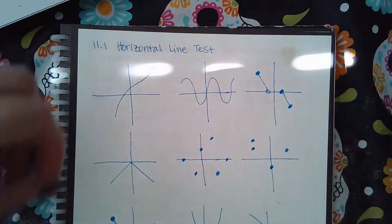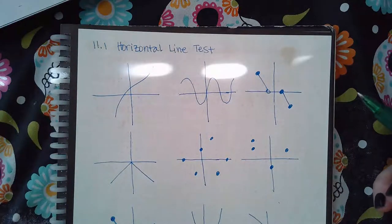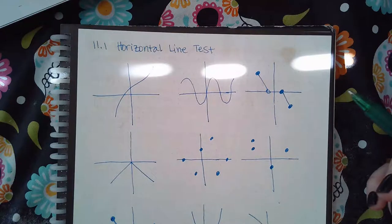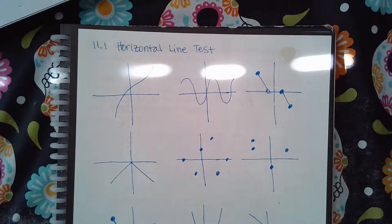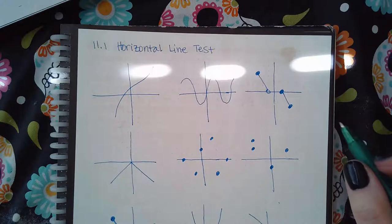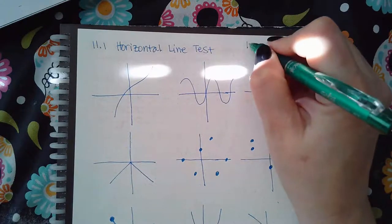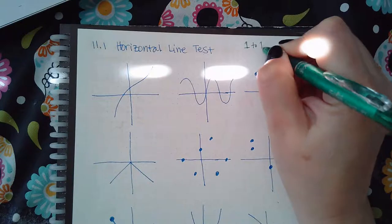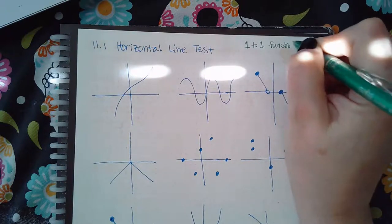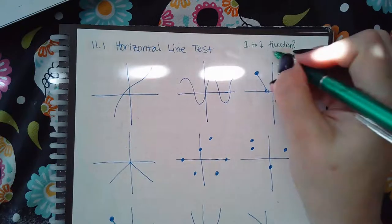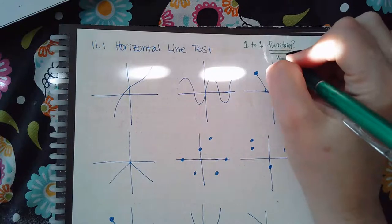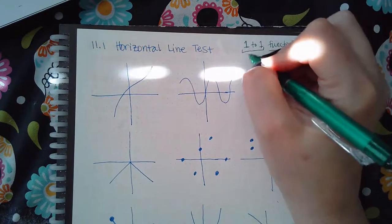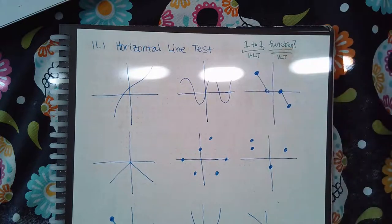One-to-one means for every x value, I get only one y value, and vice versa — for every one y value, I get only one x value. Now they ask: is it a one-to-one function? Not only does it have to pass the vertical line test to be a function, but it also has to pass the horizontal line test to be one-to-one.